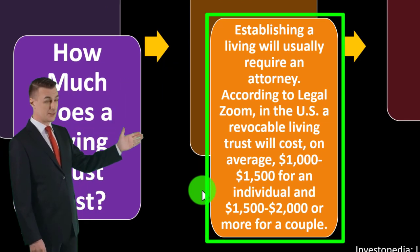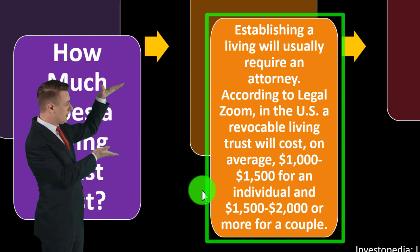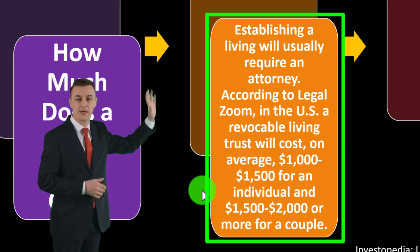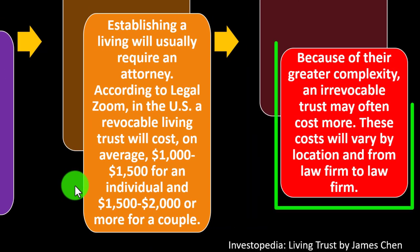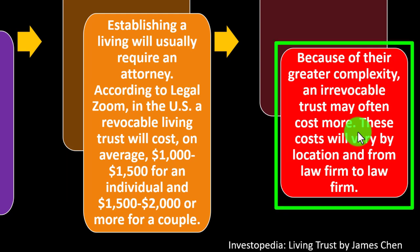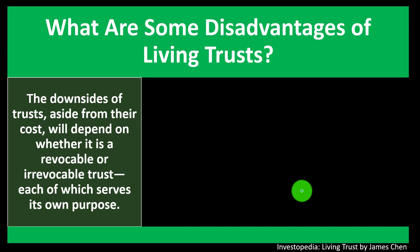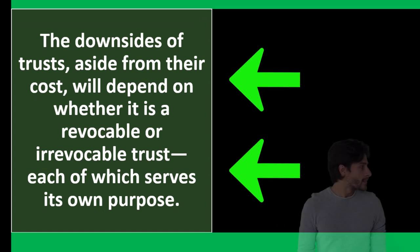How much does a living trust cost? Establishing a living trust usually requires an attorney. According to LegalZoom, in the U.S., a revocable living trust costs on average $1,000–$1,500 for an individual, and $1,500–$2,000 or more for a couple. An irrevocable trust may often cost more, and is more common in advanced estate planning. These costs vary by location and law firm.